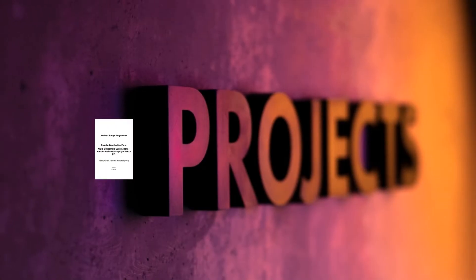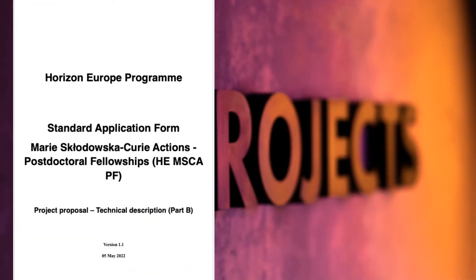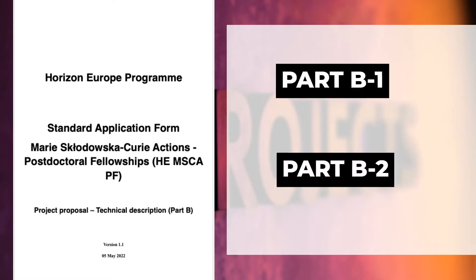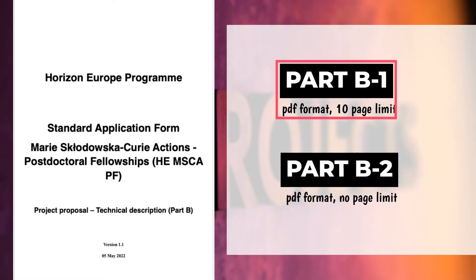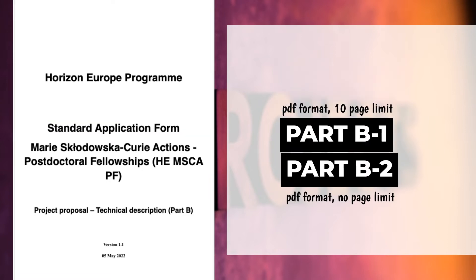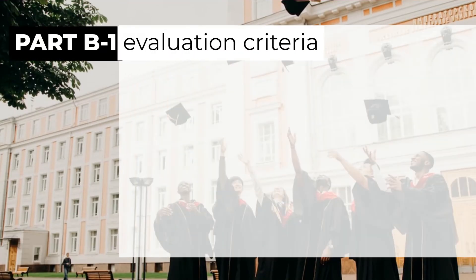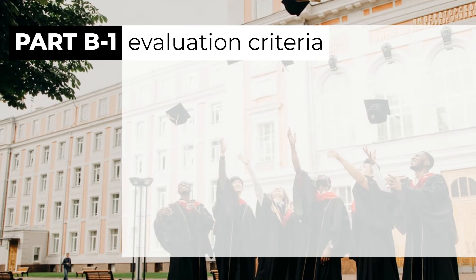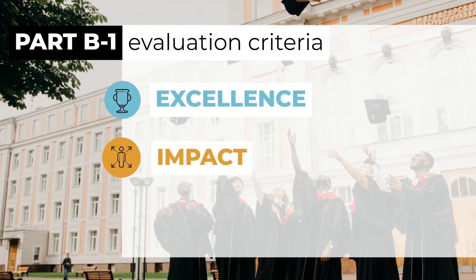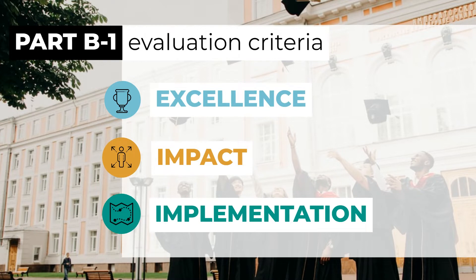The core scientific part of the project proposal for Marie Skłodowska-Curie Actions Postdoctoral Fellowships is Part B1. According to the standard application form, Part B1 is composed and assessed according to three evaluation criteria: Excellence, Impact, and Quality and Efficiency of the Implementation. We shall now consider all three criteria and make some additional recommendations and tips beyond the template in order to succeed in this high-quality competition.